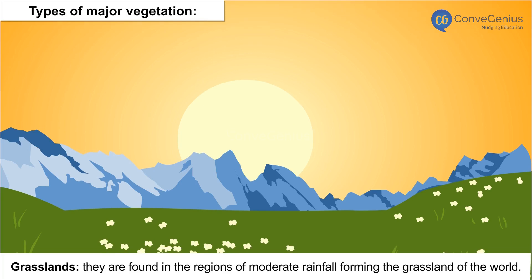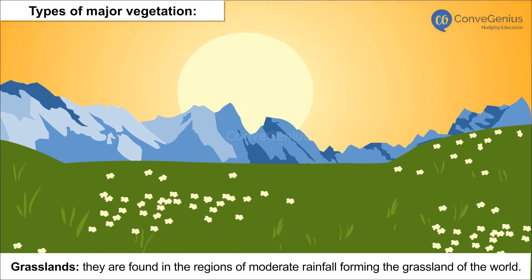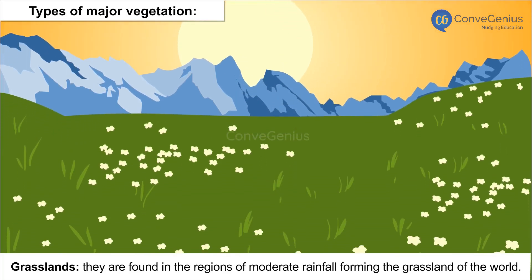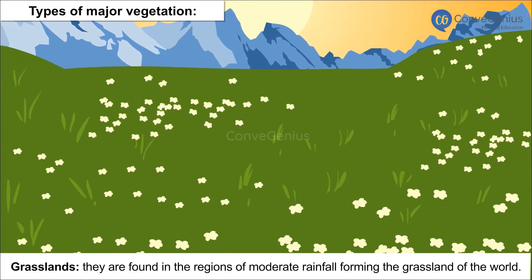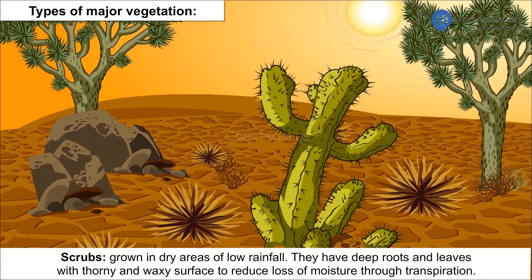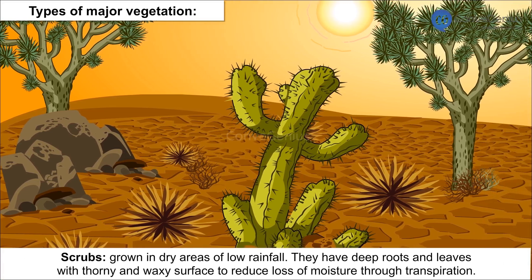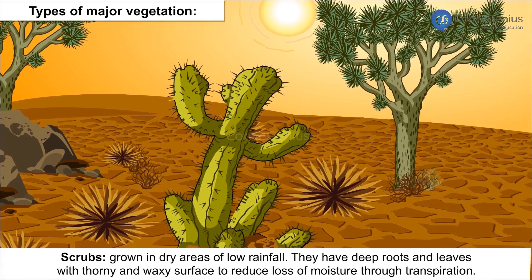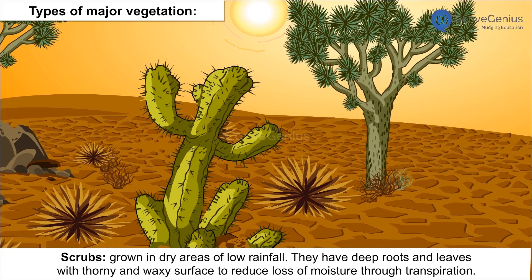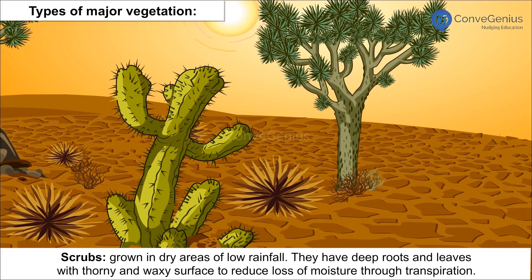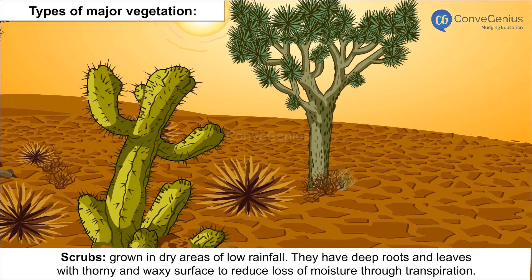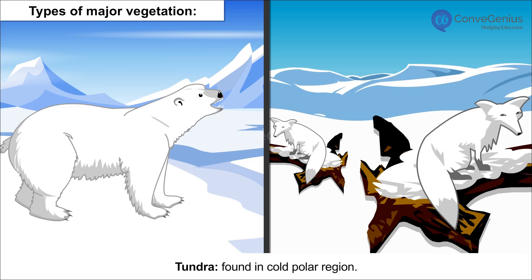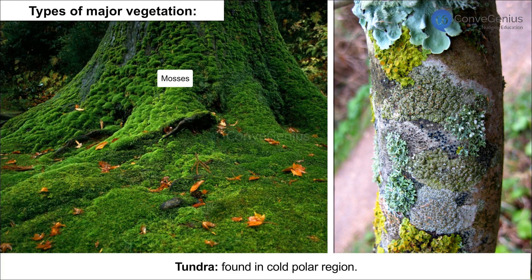Grasslands are found in regions of moderate rainfall, forming the grasslands of the world. Scrubs grow in dry areas of low rainfall; they have deep roots and leaves with a thorny and waxy surface to reduce loss of moisture through transpiration. Tundra vegetation is found in cold polar regions, with examples including mosses and lichens.